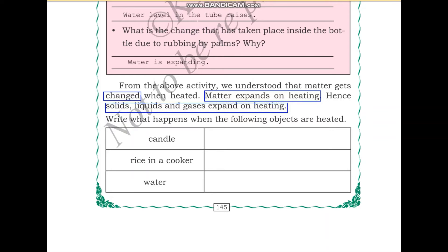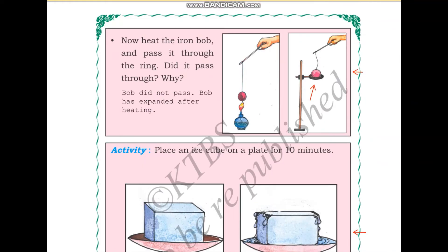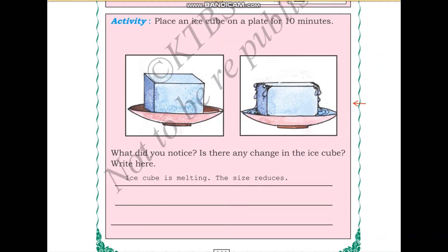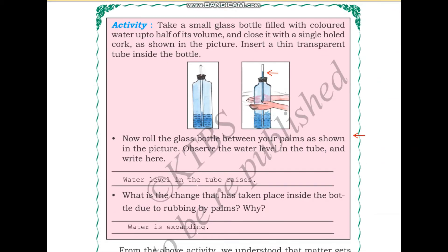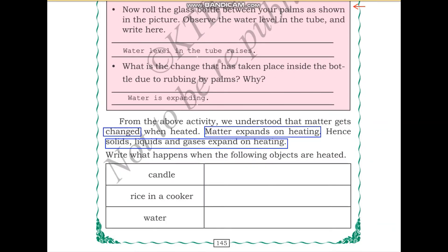From the three experiments we conducted: first, we saw that when the bob is heated it does not go through the ring. Then we saw that cooling reduces the size of ice. Then we saw that rubbing a water bottle with your palms leads to the rise in water level in the tube. We discovered that solids, liquids, and gases expand on heating.